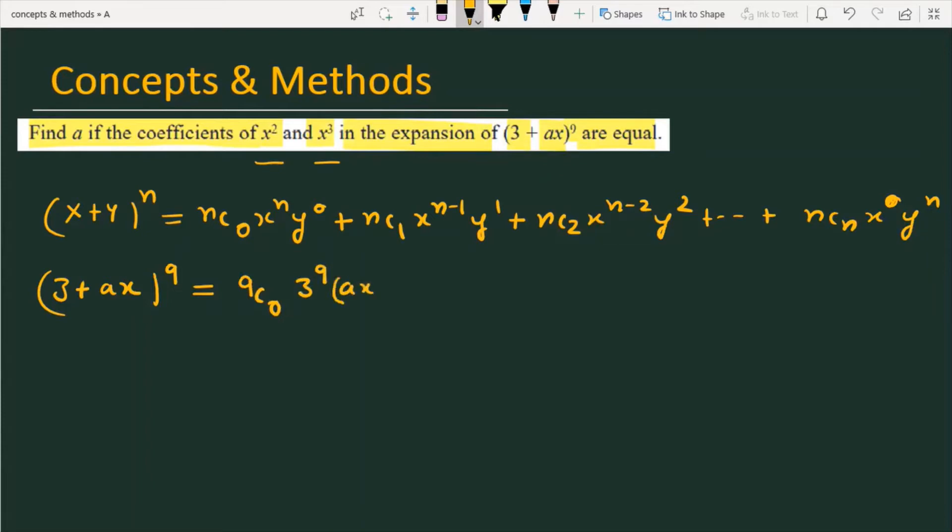The second term is ⁹C₁ · 3⁸ · (ax)¹, then ⁹C₂ · 3⁷ · (ax)², plus ⁹C₃ · 3⁶ · (ax)³ plus dot dot dot. There will be a total of ten terms.